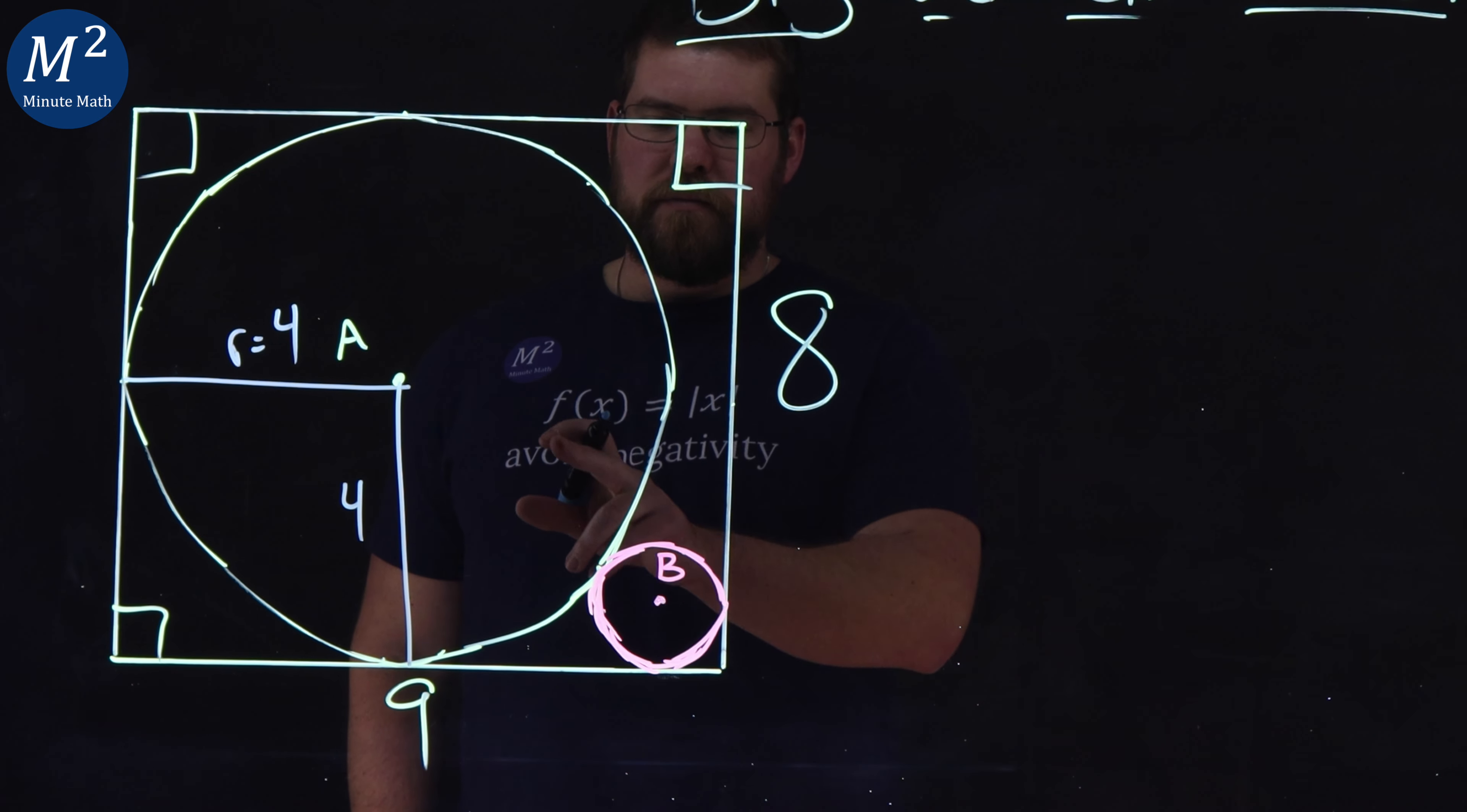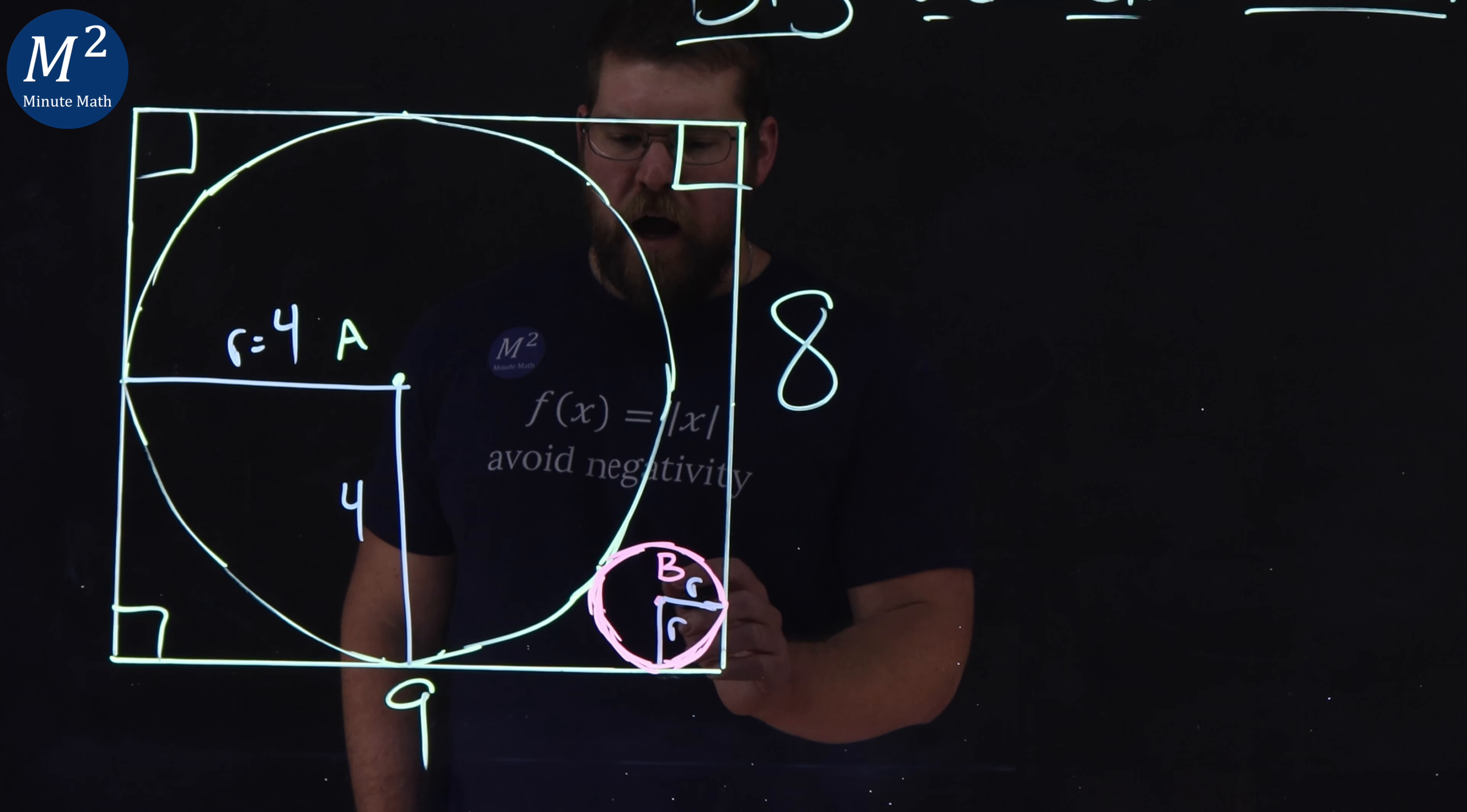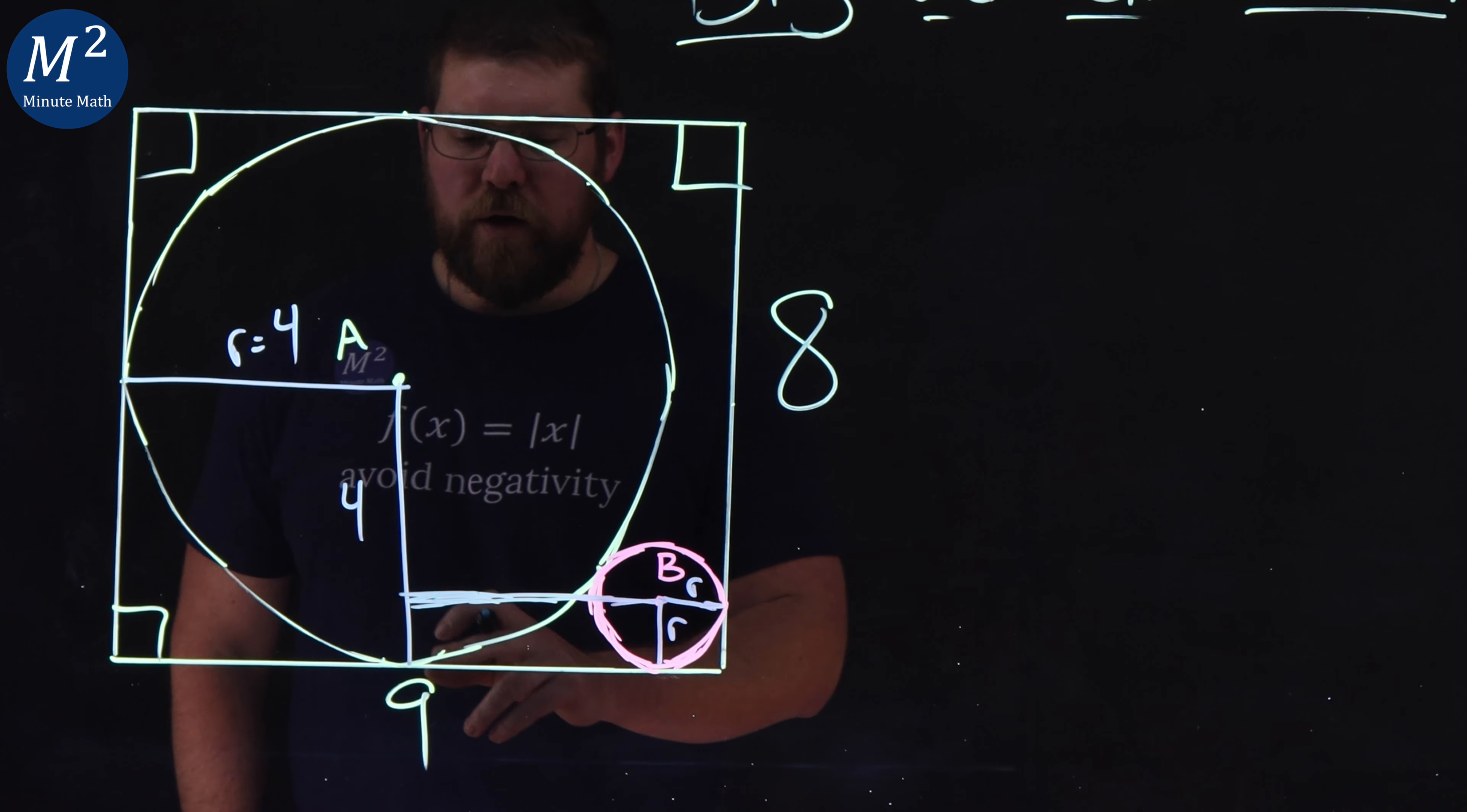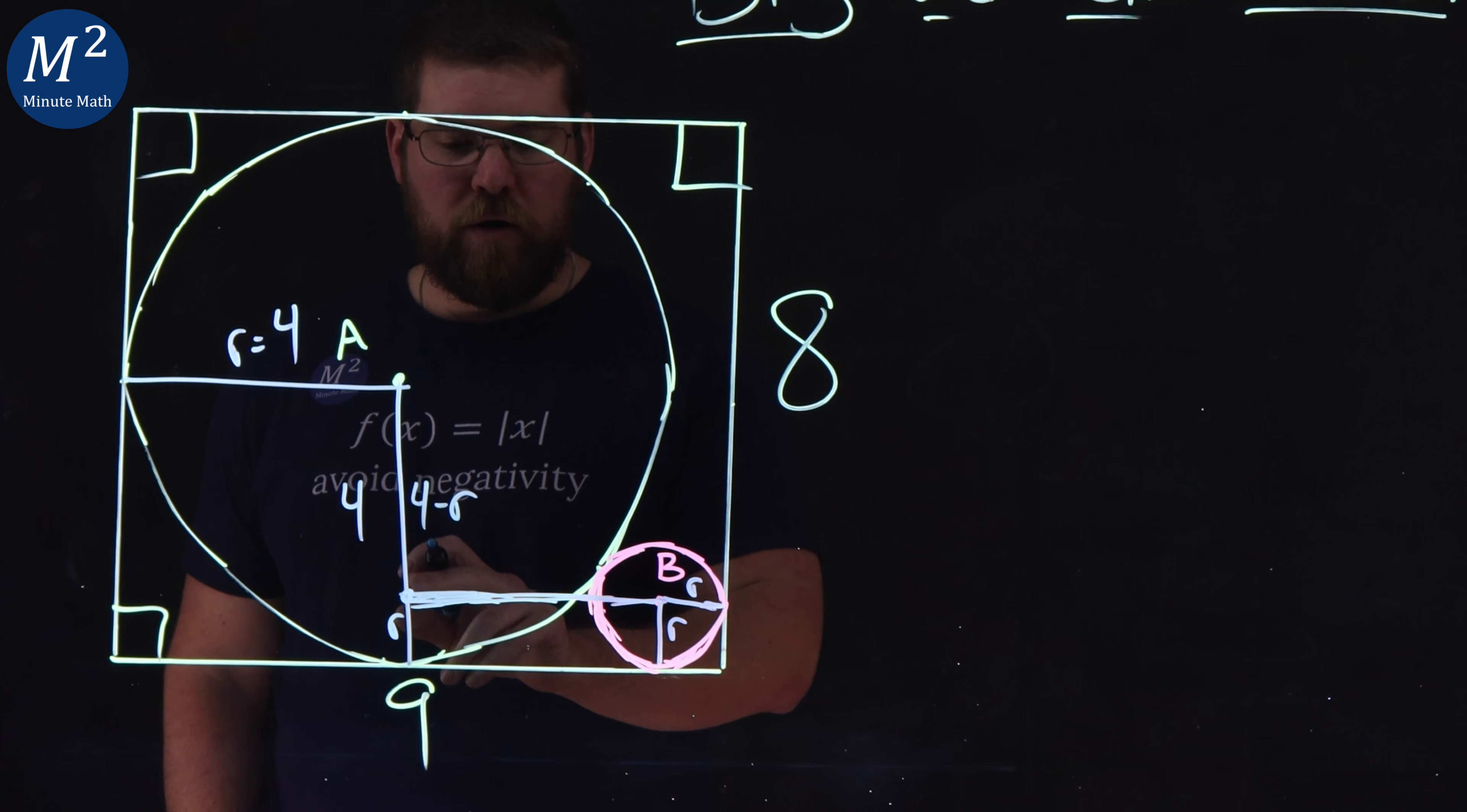But what about the radius of B? We don't know what that is. What if we called that R? We'll just call the radius of B to be R. And that radius also comes down here as well. Let's call it R. I'm going to draw a line across everything here, across this distance right here. Okay, straight line across. And what do we know about the distance from here to the bottom? That is also R. That also means that the length from the center of circle A to R is the radius of four minus that R as well.